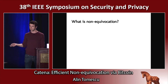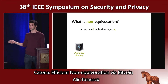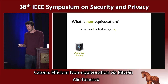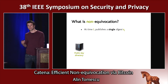Let me start by explaining the title. What is this non-equivocation thing? To explain this, I'll use a public key directory as an example. This directory, every time period i, would publish a digest si of the directory. That digest is simply a Merkle tree hash. What non-equivocation says is that at every time period i, the server only publishes a single unique digest si.